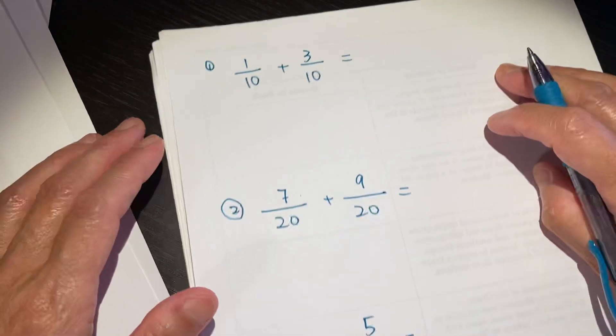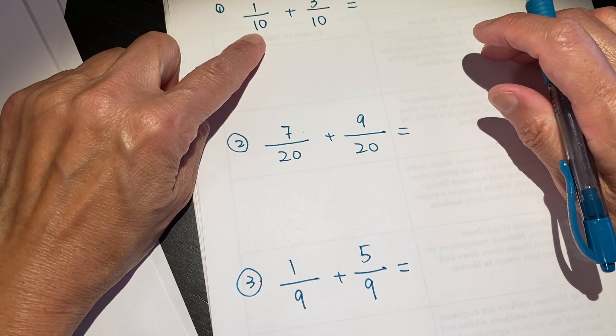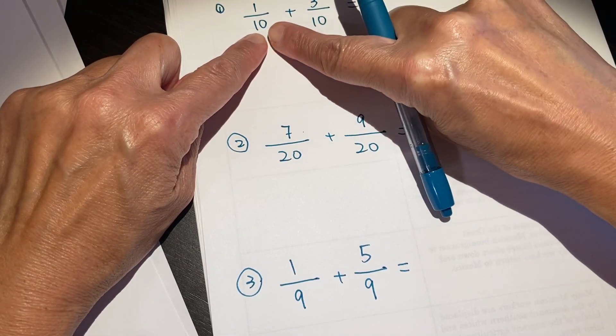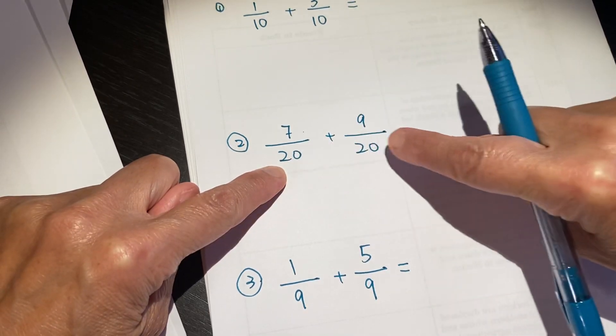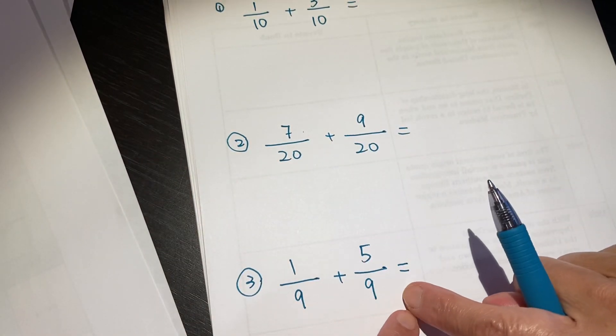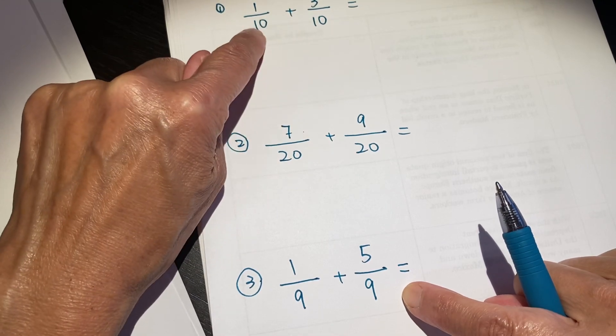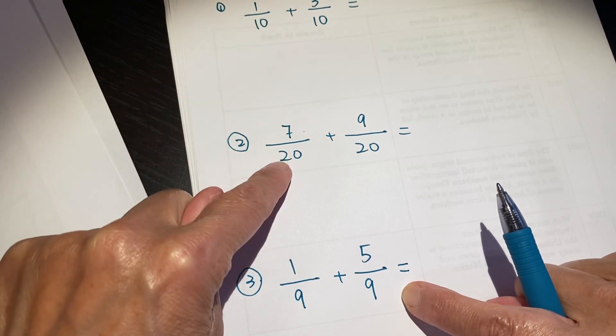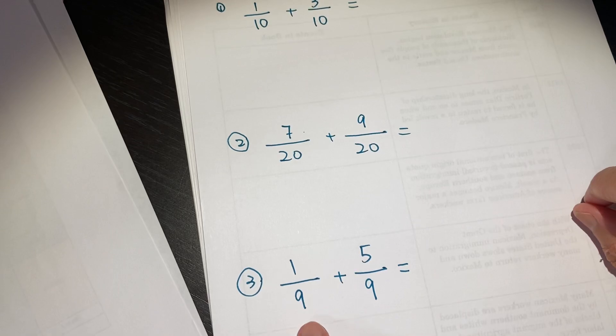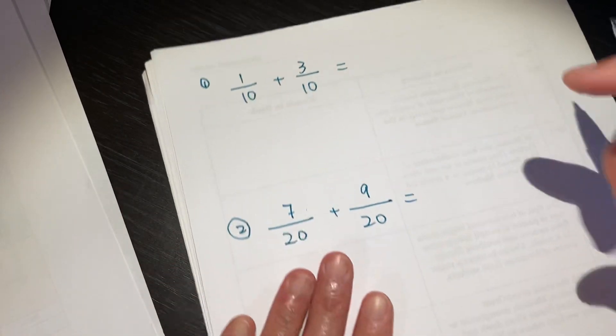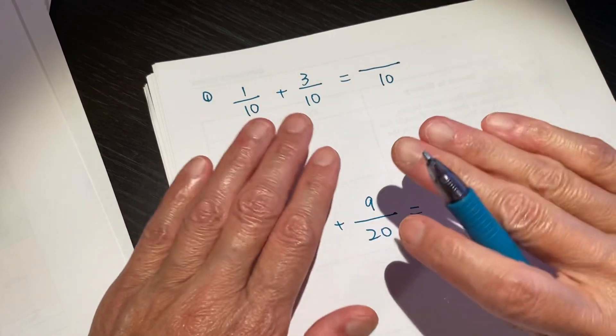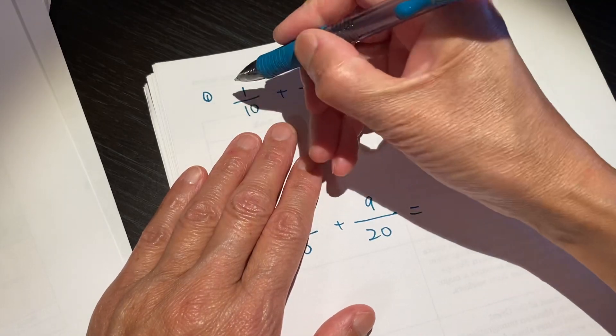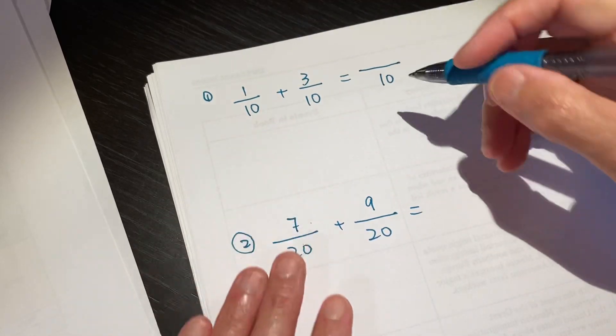What do we find? We find one thing in common, that the denominator or the bottom part in each of these equations is the same. Both are 10, both are 20, both are 9. And it is very easy, the bottom number, we copy it, do not change, do not do anything. The top number, we add together.